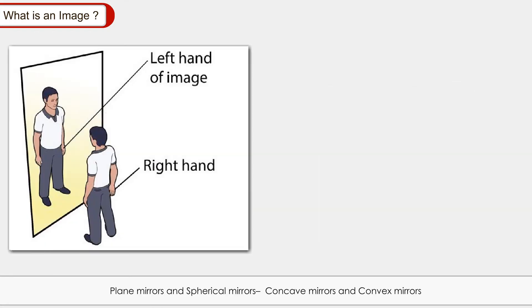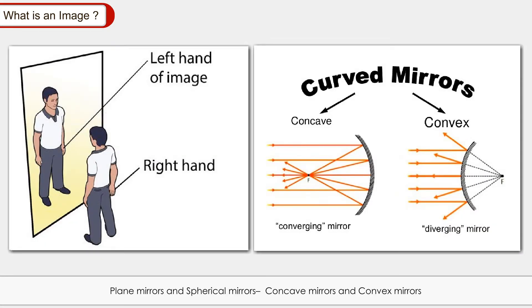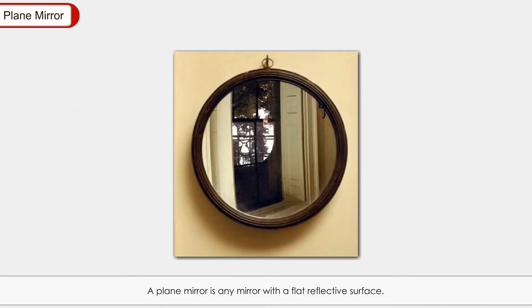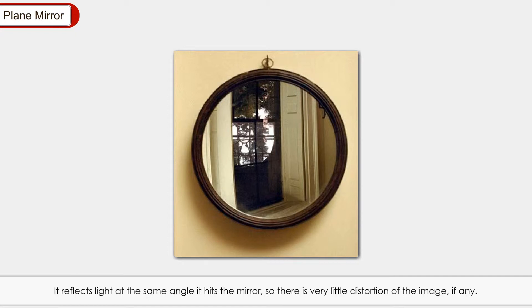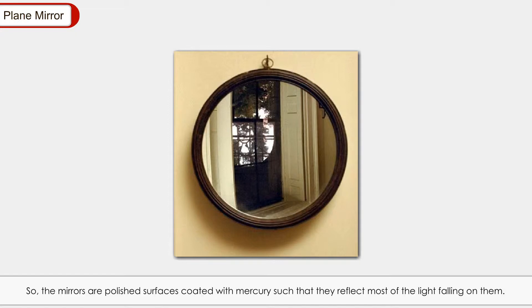Mirrors are basically of two types: plane mirrors and spherical mirrors, which include concave mirrors and convex mirrors. A plane mirror is any mirror with a flat reflective surface. It reflects light at the same angle it hits the mirror, so there is very little distortion of the image. The mirror hanging in our bathroom is a plane mirror. Mirrors are polished surfaces coated with mercury such that they reflect most of the light falling on them.